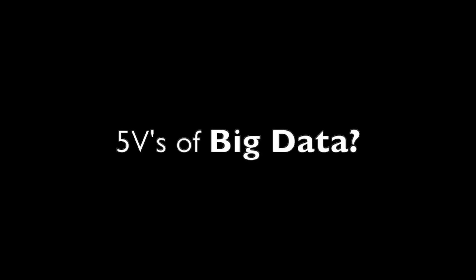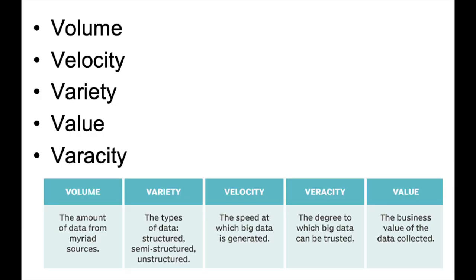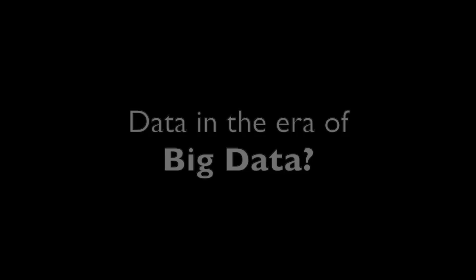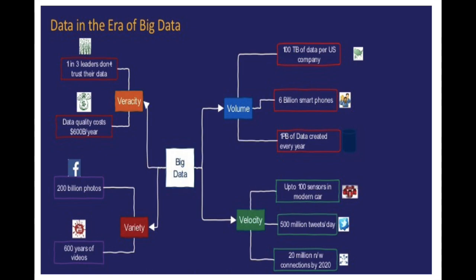There are five V's of big data. The first V is volume, second is velocity, third is variety, fourth is value, and fifth is veracity. Volume means the amount of data from various sources — high volume, huge size. Variety refers to the type of data, whether structured or unstructured. Velocity is the speed at which data is generated. Veracity is the degree to which data can be trusted. Value is the business value of the data collected.